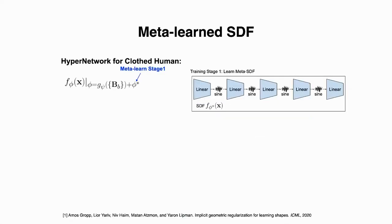The meta-learning consists of two stages. In stage 1, we meta-learn phi_star on all training subjects with different poses, shapes, and clothing types, without conditioning on poses. This meta-learned network serves as a strong shape prior.